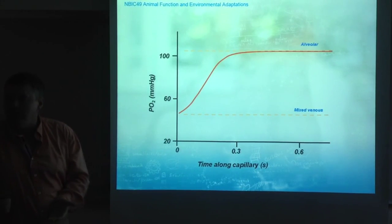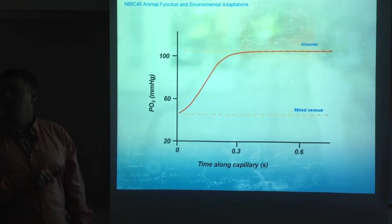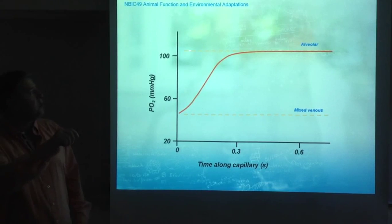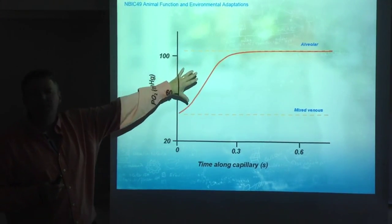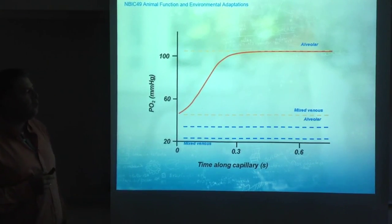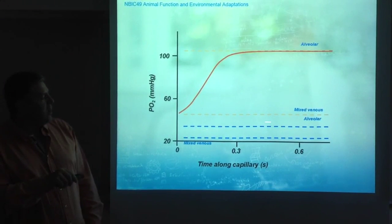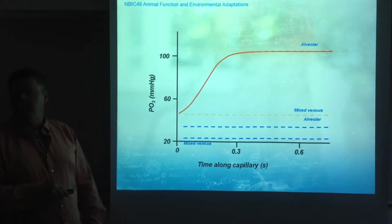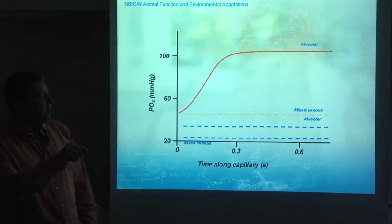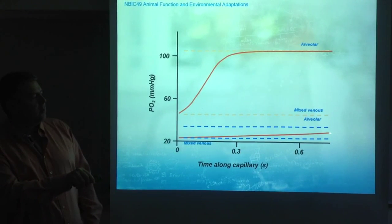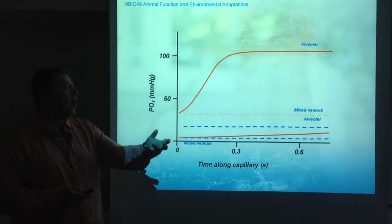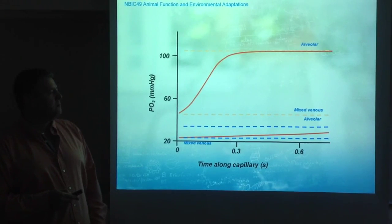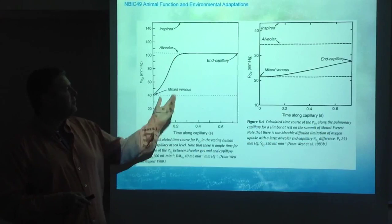The only way to get the blood more oxygenated in this scenario would be to raise the alveolar partial pressure of oxygen by hyperventilation, elevating the ceiling further. On Mount Everest the scenario is very different: both mixed venous and alveolar partial pressures are much lower. Even within these reduced limits, full equilibration is not reached by the end of the capillary — there is a significant difference in the capacity of oxygen diffusion to reach the blood. This is the modeled data from the referenced paper.